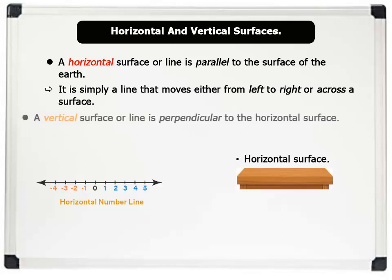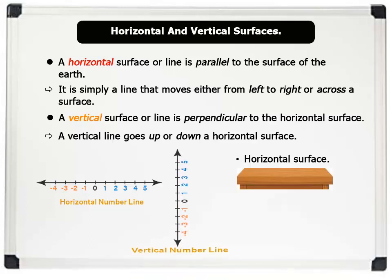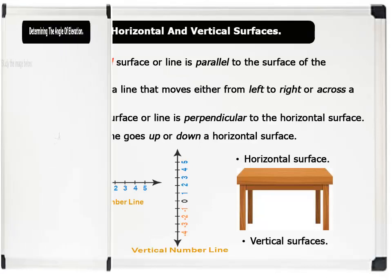A vertical surface or line is perpendicular to the horizontal surface. This simply means that a vertical line goes up or down a horizontal surface. For example, here is a vertical number line. Also, the legs of a table are all vertical surfaces. That's amazing.